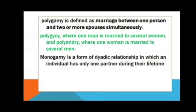Polygamy is defined as marriage between one person and two or more spouses simultaneously. Monogamy is a form of dyadic relationship in which an individual has only one partner.